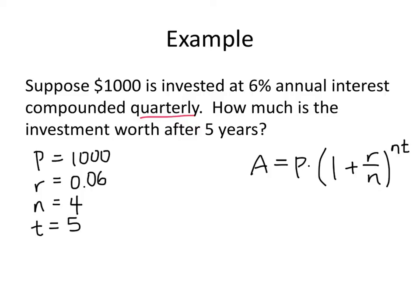So now all we have to do is plug all of these numbers into this formula, and then use our calculator to figure out what the answer is. So we've got 1,000 times 1 plus 0.06 divided by 4, raised to the 4 times 5.